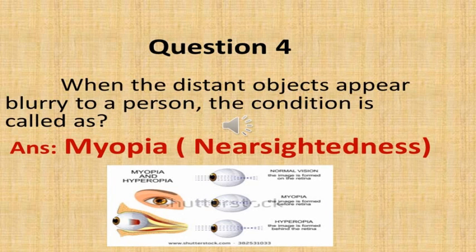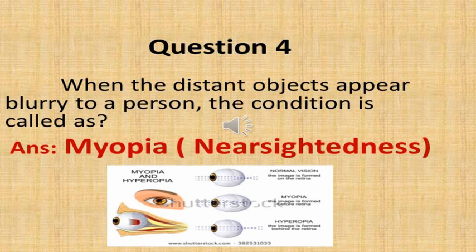The next question is: when distant objects appear blurry to a person, the condition is called? The answer is myopia, also known as nearsightedness. As we see in this picture, the first upper picture is a person of normal vision — the image of any object is formed at the retina. But in patients suffering from myopia, the length of the eyeball gets enlarged and the image of any object is formed in front of the retina. This is known as myopia or nearsightedness.